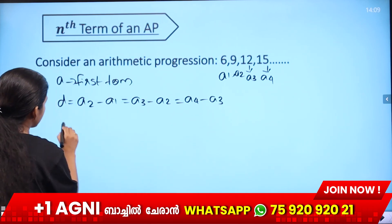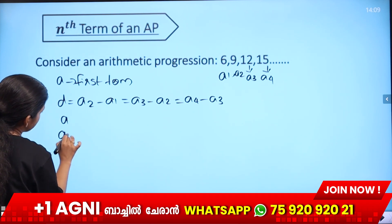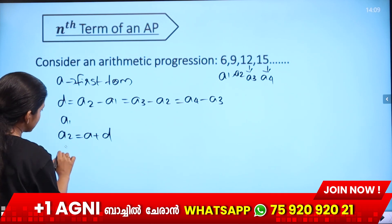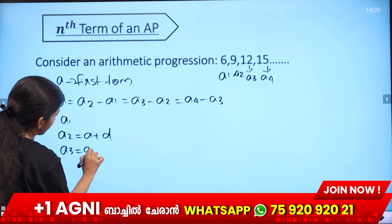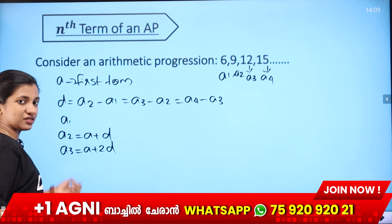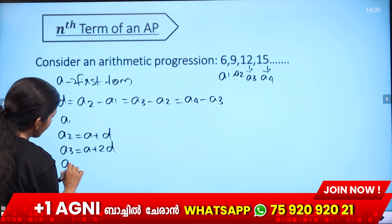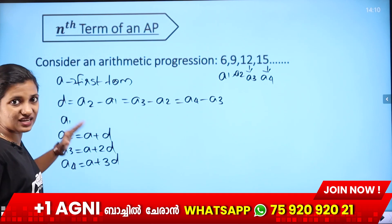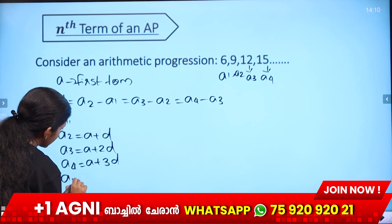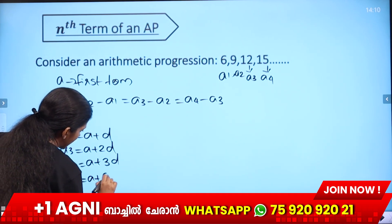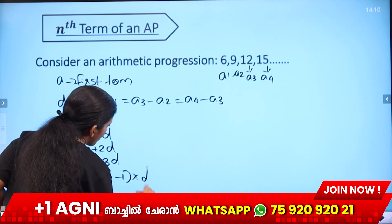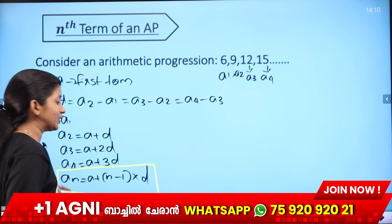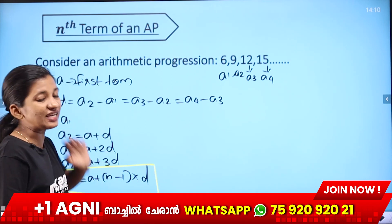The first term is 'a'. The second term a2 equals a plus d. The third term a3 equals a plus 2d. The fourth term a4 equals a plus 3d. So finally, the general equation is: an equals a plus (n minus 1) into d. In an arithmetic progression, the nth term is an = a + (n−1)d.